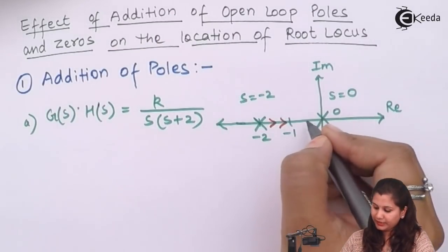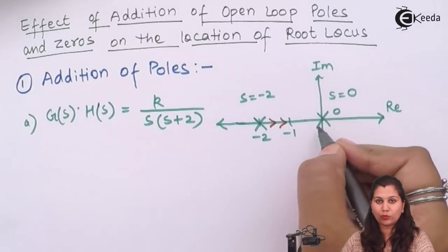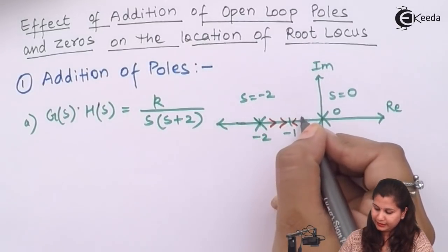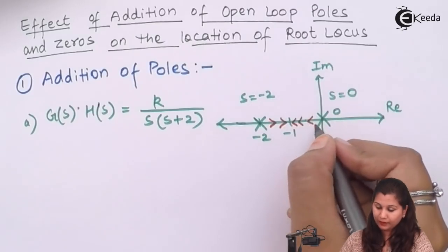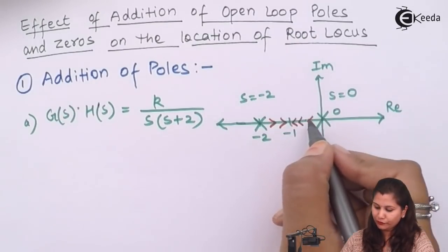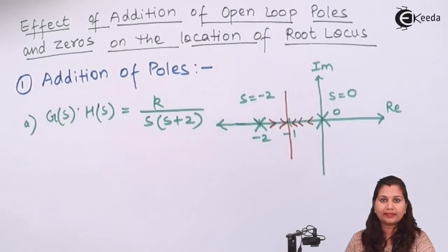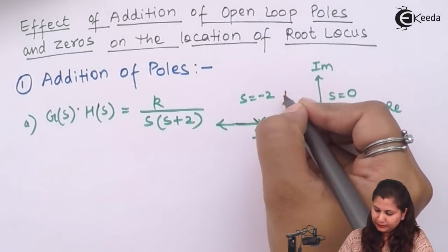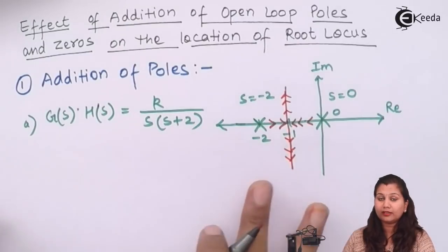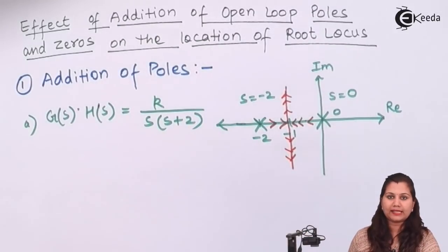Now for this pole, if we take a point here, then the number of poles on the right hand side is 1, that is odd. So the direction of root locus will be towards infinity, that is in this direction. Now due to this pole the direction of root locus is this, and due to this pole the direction of root locus will be this. So at some point the two root loci will meet and then diverge. So this is the root locus for transfer function k upon s(s+2).